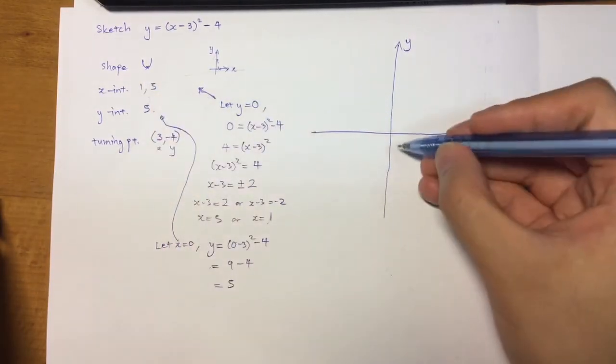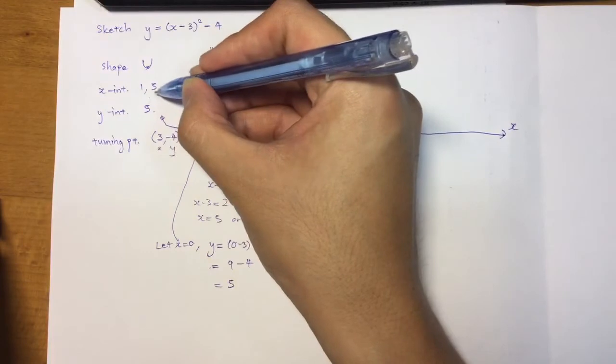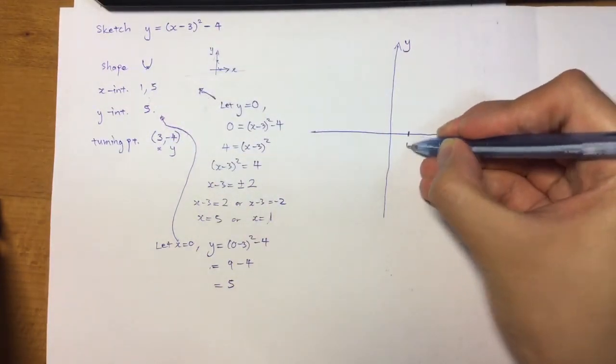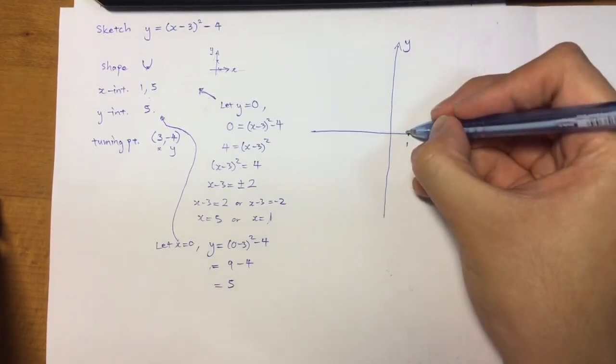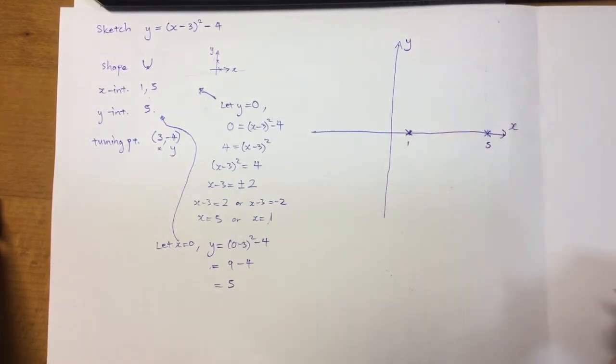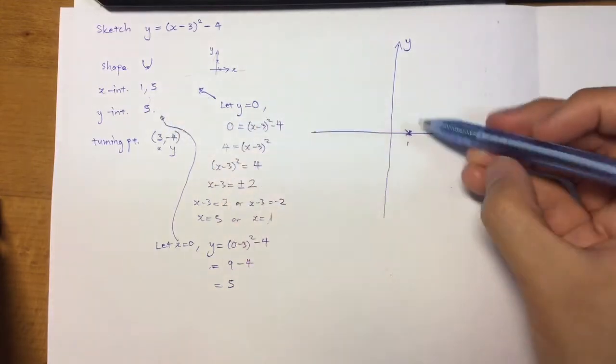So fill in the points. I have 1 and 5. It passes through x value 1, x value 5. So let's do an estimation. 1 is here maybe, and 5 is here. So I put a cross at each point. Okay, now I know y-intercept is 5.